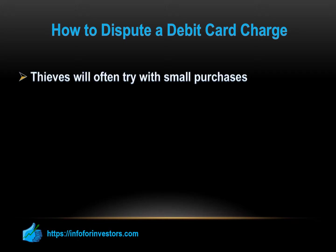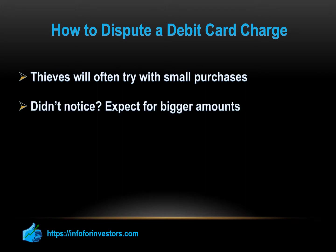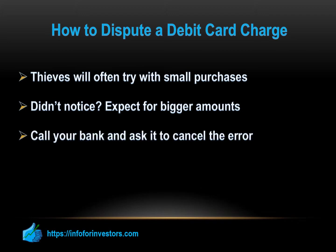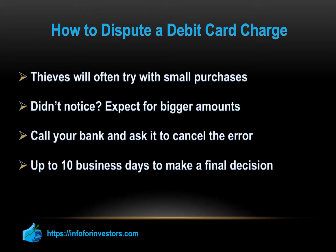Thieves will often try with small purchases, and if the account holder does not notice or fails to act, they will follow up with a large purchase. You can check a charge against the merchant name on your statement and match it with your past purchases. When you want to dispute a charge, call your bank and ask them to cancel the error so they can restore your account balance to its previous level. Note that it may take up to 10 business days to reach a final decision. You can make your request through the bank's customer service hotline — the number is usually posted on their website or on the back of the card. Report fraudulent charges immediately and provide as much detail as possible.